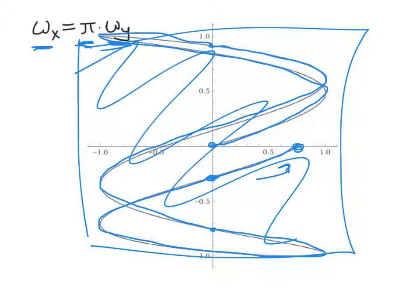You've probably seen these kinds of curves before — they're called Lissajous figures. You'll be asked to create your own Lissajous figures as part of the homework for this chapter. I wanted to make sure you had an intuitive sense for what the ratio of the frequencies actually means physically.